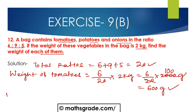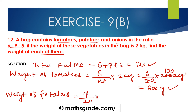Weight of potatoes will be 9 divided by 20, multiplied with 2000 g. Cancelling 20 and 2000, that gives 100. So 9 multiplied by 100 is 900 g. Weight of potatoes is 900 g.